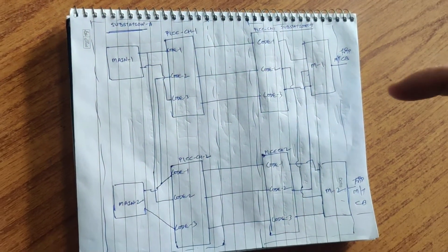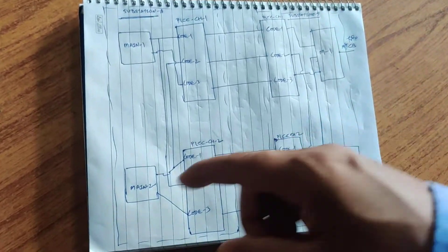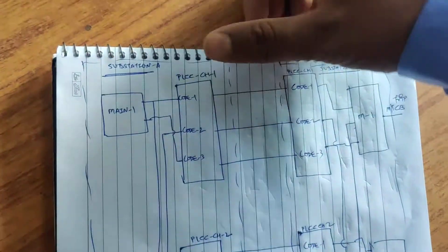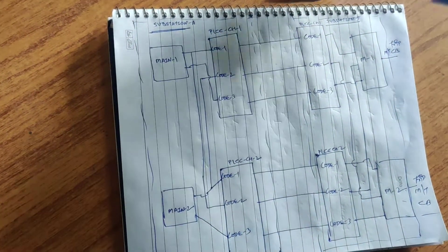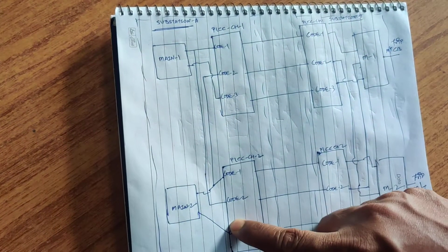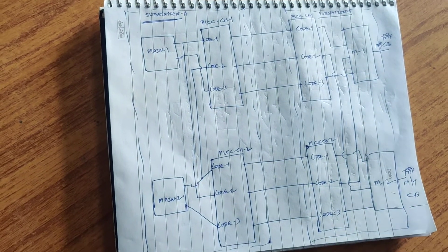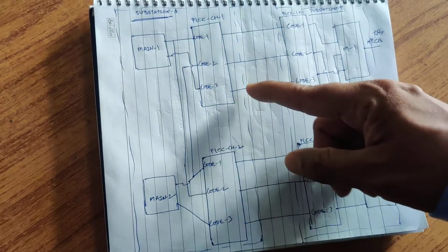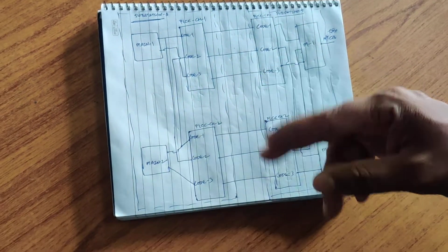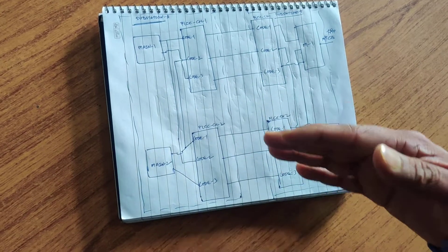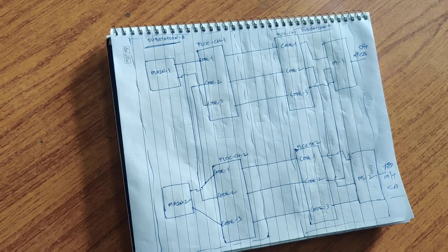We use both code one and code two for the permissive scheme. For example, in an under-reaching scheme, main one relay will send the carrier after zone one picks up. Main one relay has two outputs: one connected to channel one code one, and the second connected to channel two code two. Similarly, main two relay also has two outputs: one connected to channel two code one, and another to channel one code two. Code three is for direct tripping only, so a single output from both main one and main two relay is used for code three.